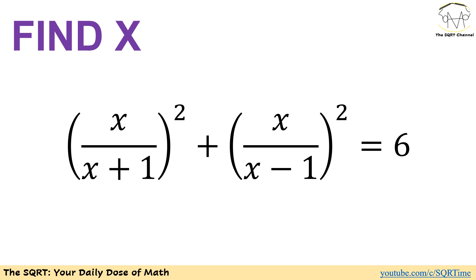We have x over x plus 1 to the power of 2 plus x over x minus 1 to the power of 2 is equal to 6 and we want to solve this equation and find what value we can have for x.